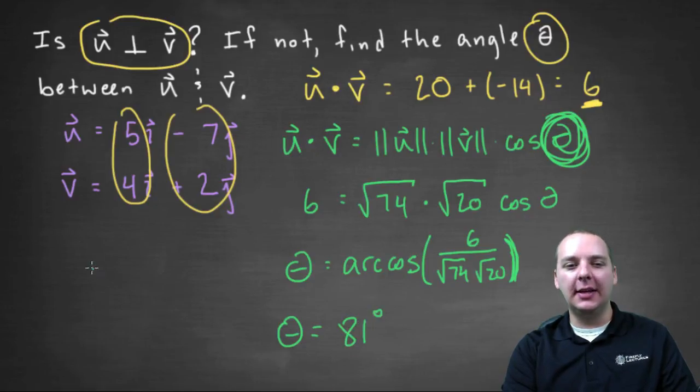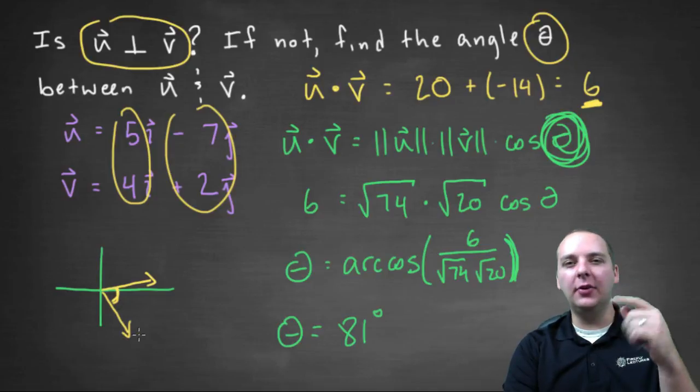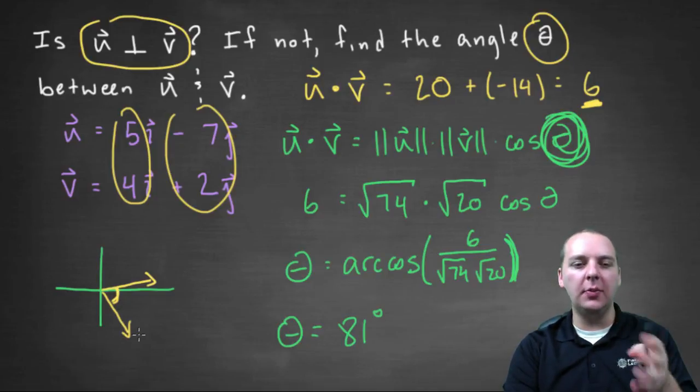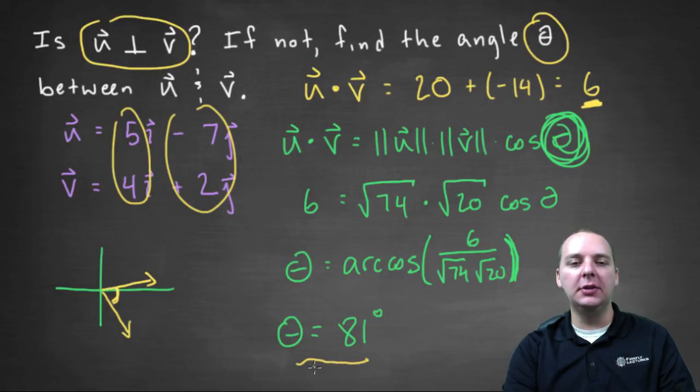If you want to sketch out u and v, just to see if that kind of makes sense and seems reasonable, you're welcome to do that. Five negative seven would be somewhere right about here, and then right four up two would be somewhere right about here. And you can tell, this is almost ninety degrees, but just not quite. I mean you can tell that just from a simple sketch. So eighty-one seems very reasonable, it looks like it's an acute angle, and so we're pretty confident that we have the right answer.